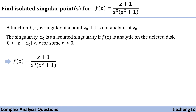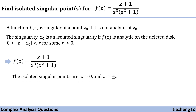We also know the singularity z0 for these three points are isolated singularities, because this function on the corresponding deleted disks can be analytic. Therefore, in this question, the isolated singular points are z equals 0 and z equals plus or minus i.